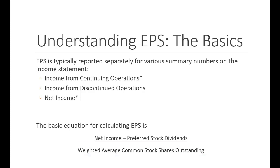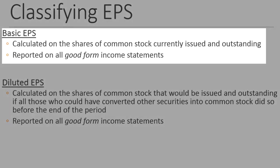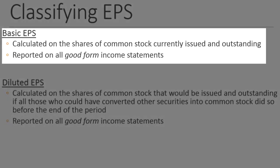Before we get into weighted average calculations, we have a couple more conceptual issues to discuss. First, the classification of earnings per share. The difference between basic and diluted earnings per share is a key concept. Basic earnings per share is calculated on the common shares currently issued and outstanding — how many real voting shares are out there. We use a weighted average number of these shares, and we report this value on all good-form income statements.